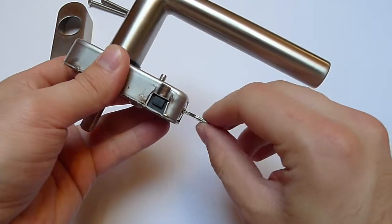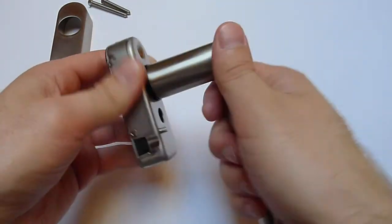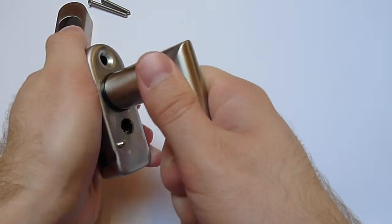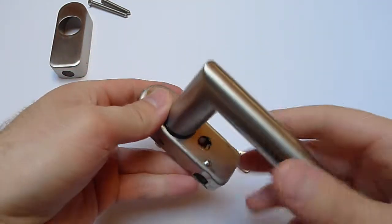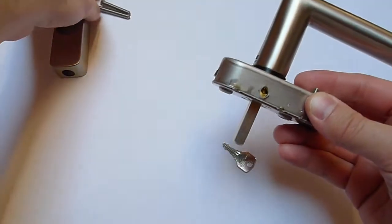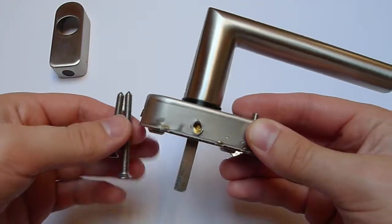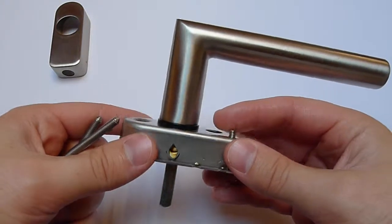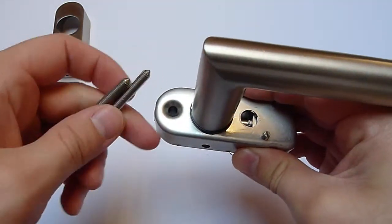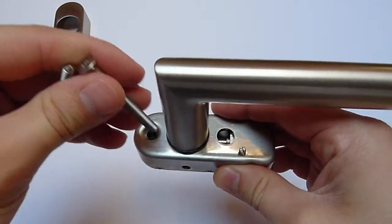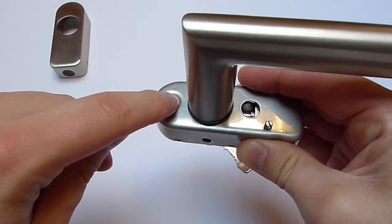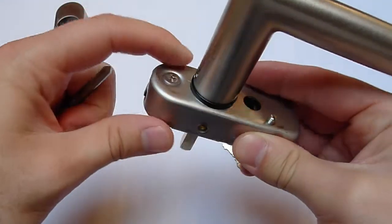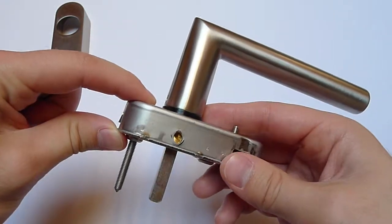And now you cannot move the handle any longer. One thing I also like very much is that you have the screws for anchoring this handle in two sizes. You have one which is a bit longer which will fixate the frame of the handle here to the frame of your window.